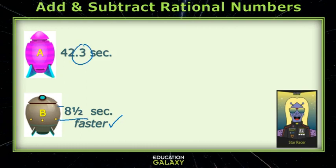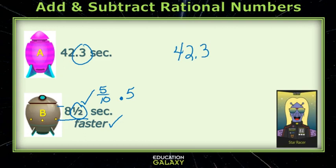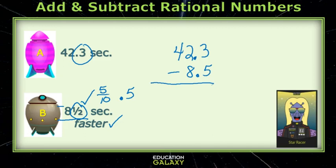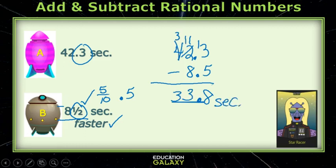I need to get these the same. I'm going to write the half as 5 tenths, which as a decimal is .5. So I'm going to have 42.3 minus 8.5. Be careful with your borrowing and do the subtraction. Remember to bring that decimal straight down. This week, I finished the race in 33.8 seconds.